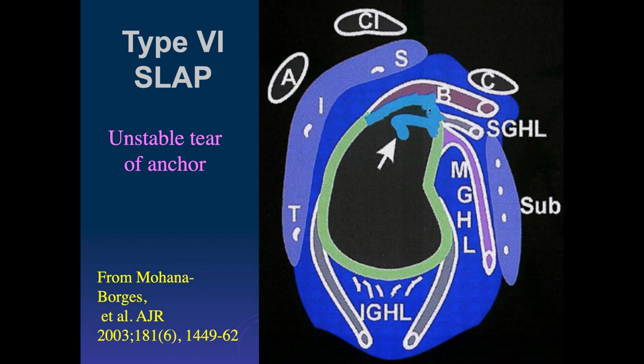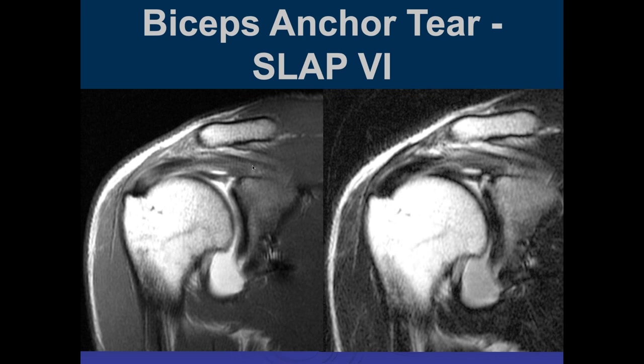This case involves the superior labrum — most people would still call it a Type 2, but at surgery the biceps was very unstable, placing it in the Type 6 category. Again, the important thing is to describe it clearly: a superior tear with a near-complete tear of the biceps anchor. That's how I would describe it in a report rather than assigning a type number.